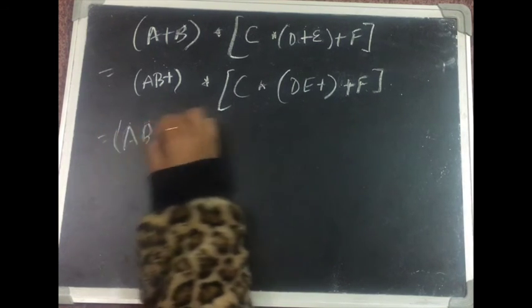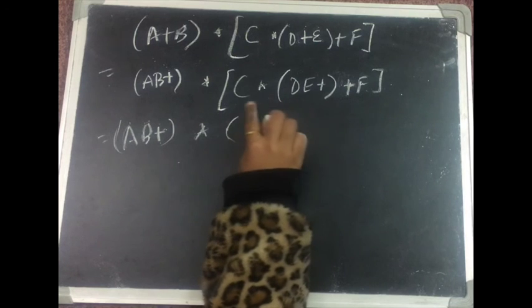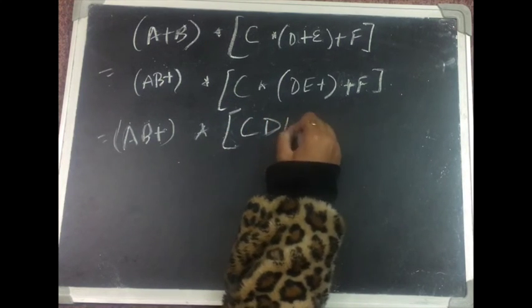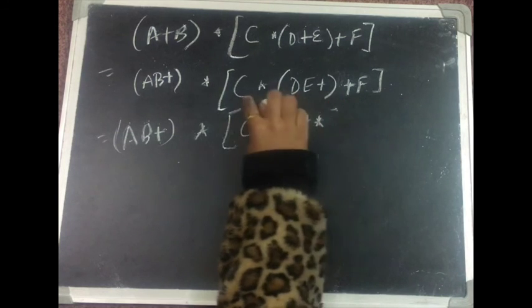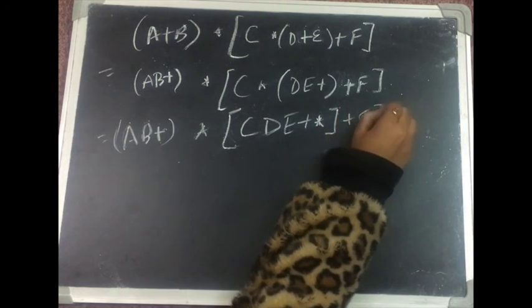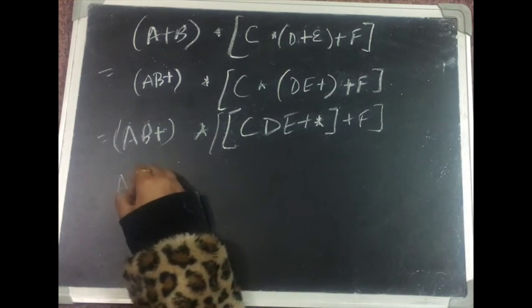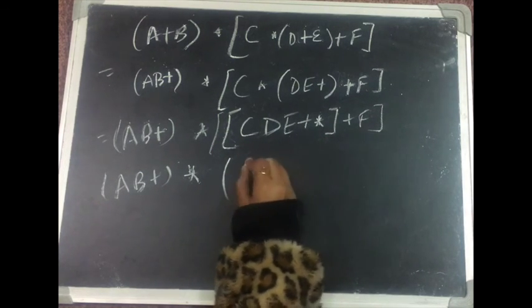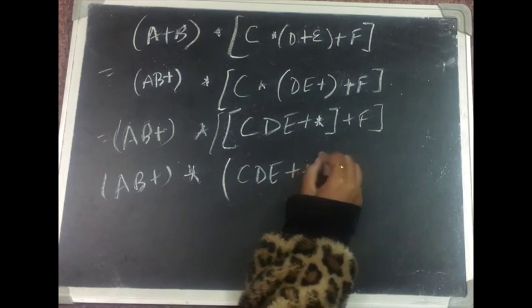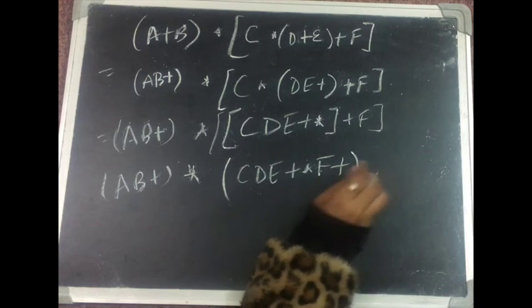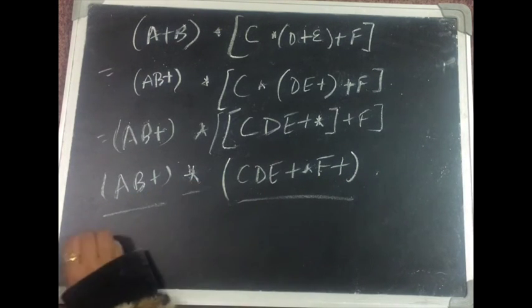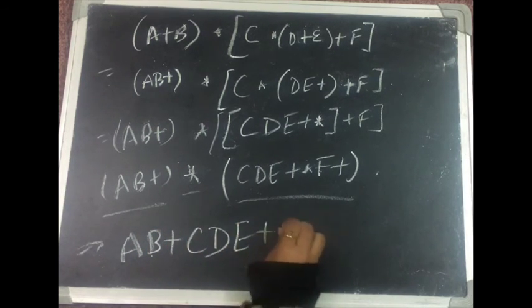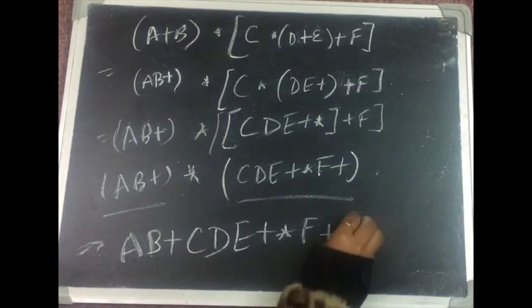Since multiplication has higher precedence, we handle that first. This gives us operand 1, operand 2, and the operator, resulting in: c d e plus star. Then plus f. Combining: c d e plus star f plus. Now treating that as one operand and continuing, the full postfix result is: a b plus c d e plus star f plus.